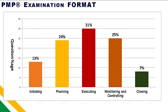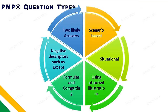Monitoring and Control starts right from the beginning of the project. Many people think they will do planning first and then start monitoring and control — but no, it starts from the very beginning. Then Planning at 24%, Initiating at 13%, and Closing at 7%.